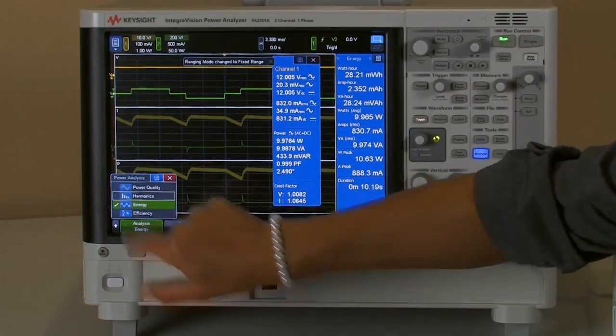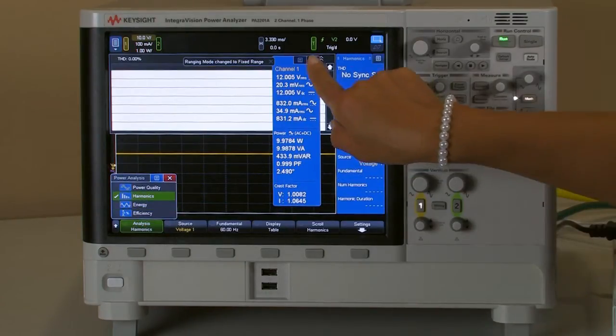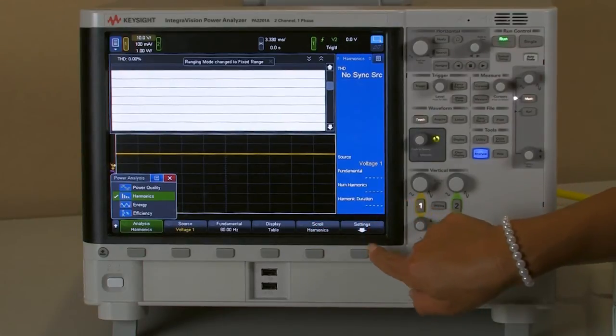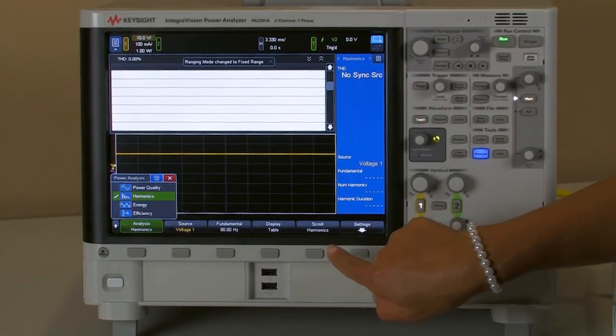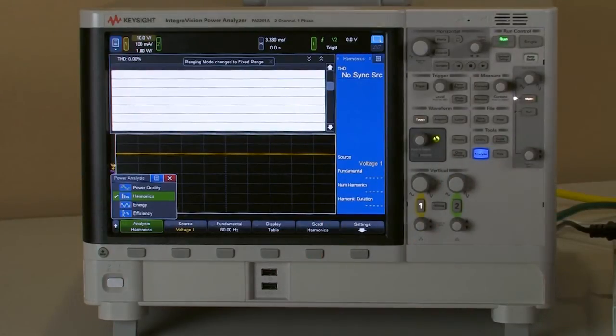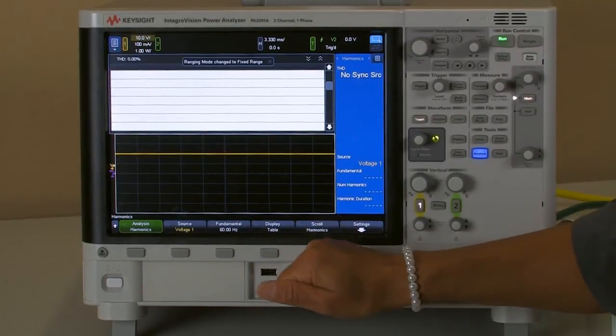And last not least I can go observe and evaluate harmonics. As we see that the signal we are drawing, the current on the AC side is very choppy.